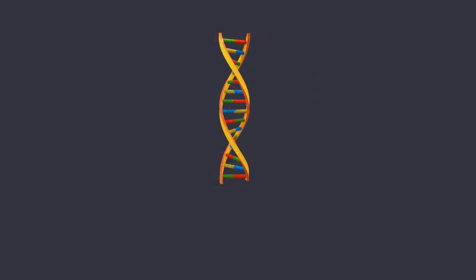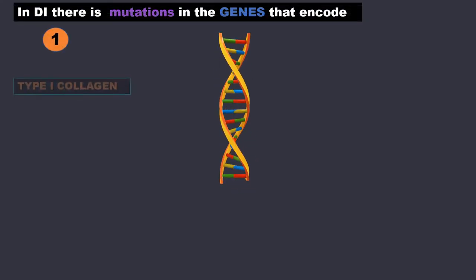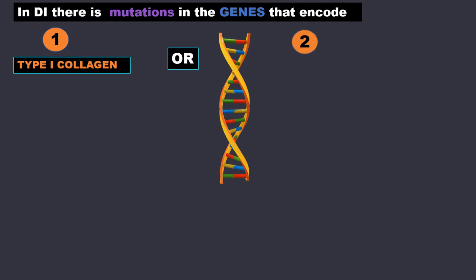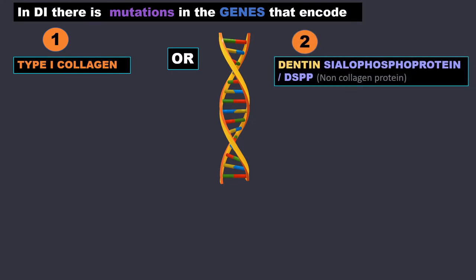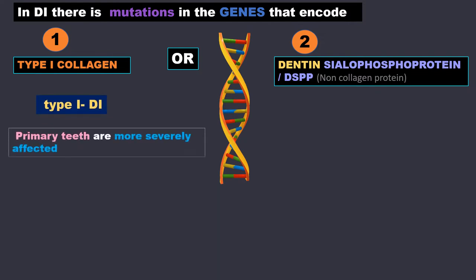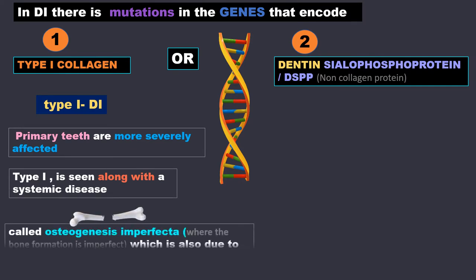In DI, there are mutations in the gene that encode either type 1 collagen or dentine sialophosphoprotein, DSPP in short. This comes under type 1 DI. Here the primary teeth are more severely affected. Type 1 is seen along with a systemic disease called osteogenesis imperfecta, which is also due to a defect in type 1 collagen.